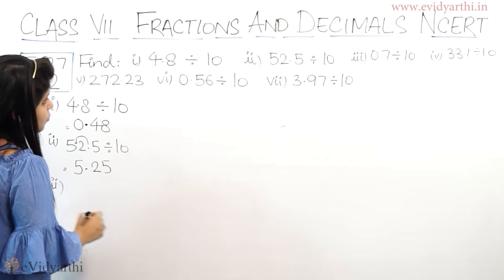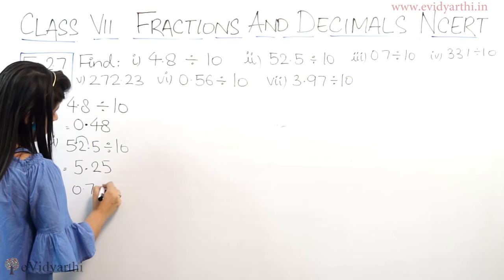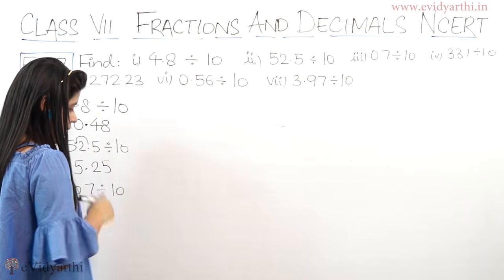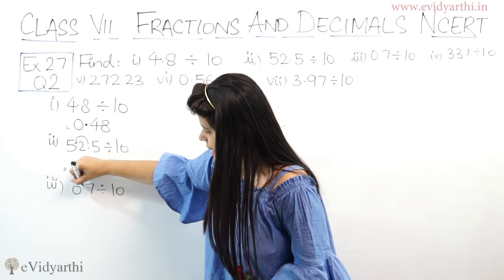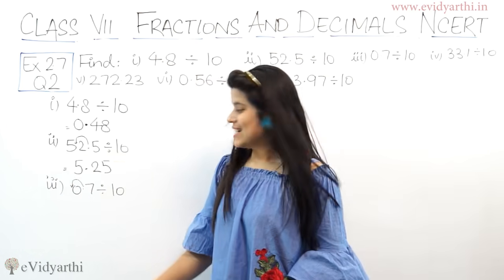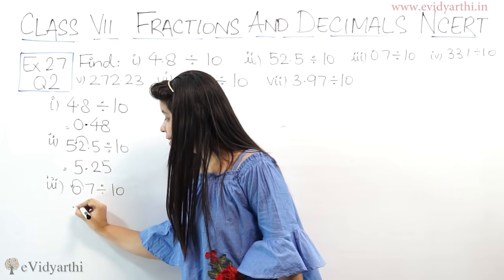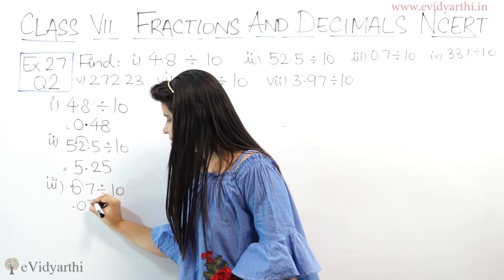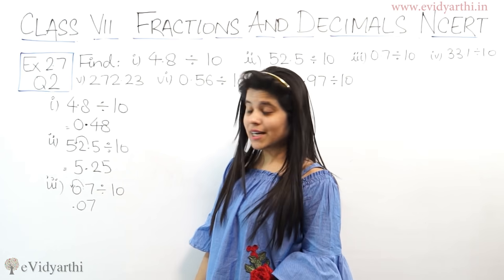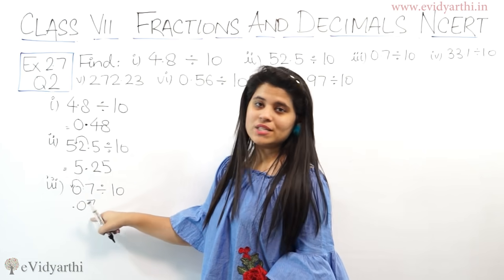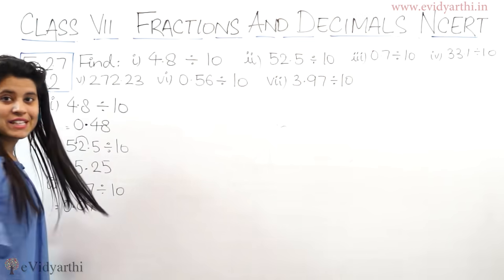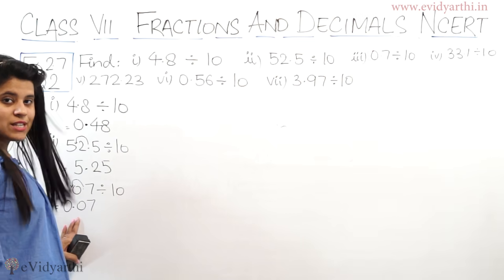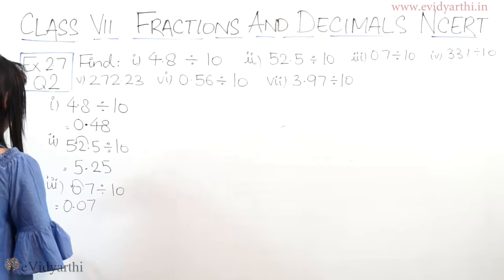Third part is 0.7 divided by 10. Again 10, 10 means 1, 0. So matlab ki left hand side pe jayega 1 digit. So yaha jayega 0.07. Kya ho jayega 0.07 which means 0.07. So 0.07 is the answer.